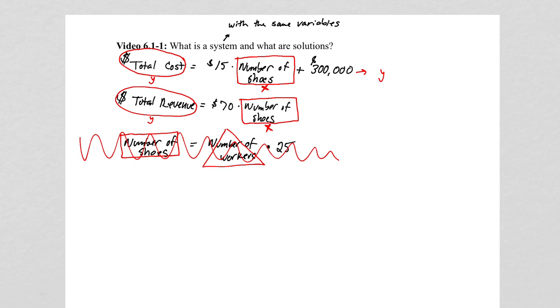So, we have two different equations. I'm going to write that as y equals 15x plus 300,000. And the second one is y equals 70x.